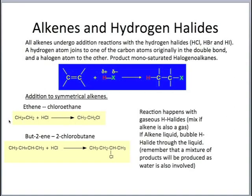So we're going from an unsaturated to a saturated molecule. Also, butene reacting with hydrogen chloride gives the product 2-chlorobutane.